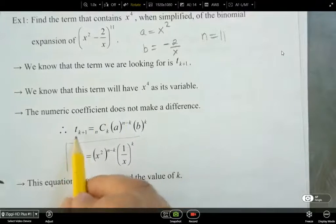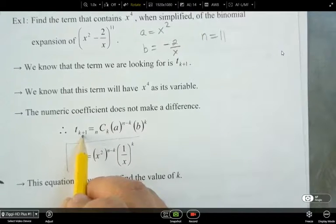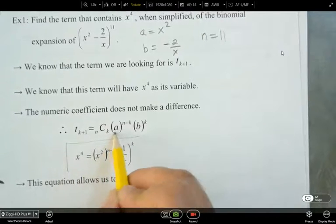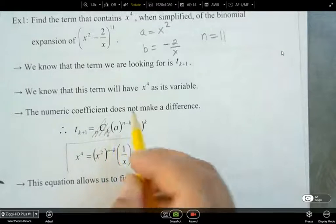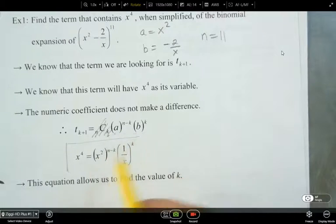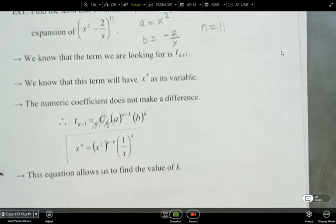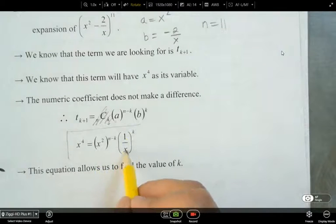All right, so the only part we actually care about is right here. We've got t of k plus 1, and we don't really need to worry too much about this. What we're looking for is which one has this guy, which one has the x to the power of 4. Because I don't really care about the coefficient, the numerical coefficient.